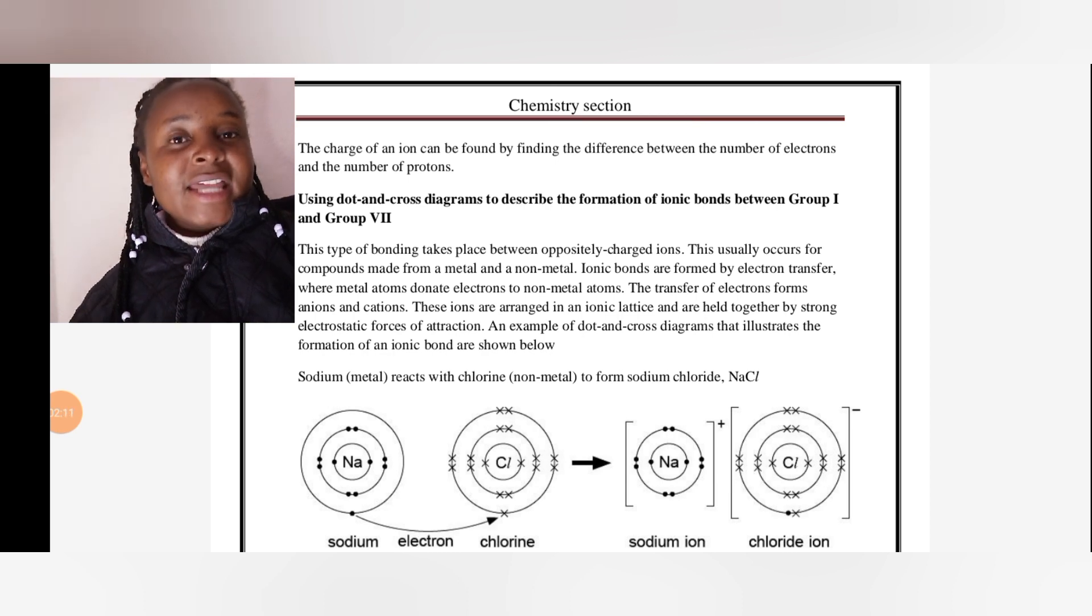The one that is donating is going to have a positive charge; the one that is receiving is going to have a negative charge. In this example, we are focusing on the reaction between group one elements and group seven elements—group one elements are all metals, and group seven elements are halogens.